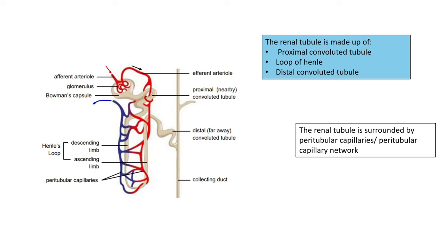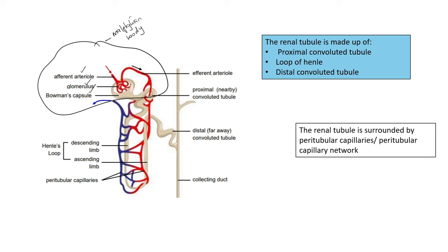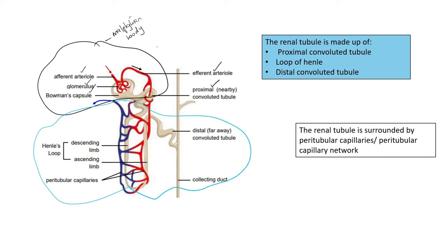Now let's move on to the renal tubule. In this diagram of a nephron, the top part is the Malpighian body. The Malpighian body consists of the afferent arteriole, the glomerulus, the Bowman's capsule, and the proximal convoluted tubule. The renal tubule is the rest of the nephron — this part highlighted in blue is the renal tubule.